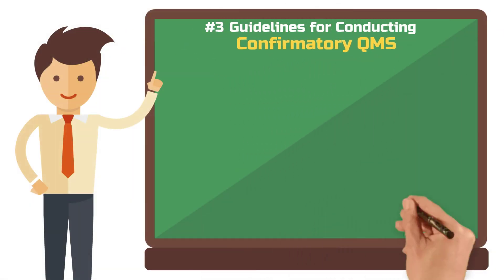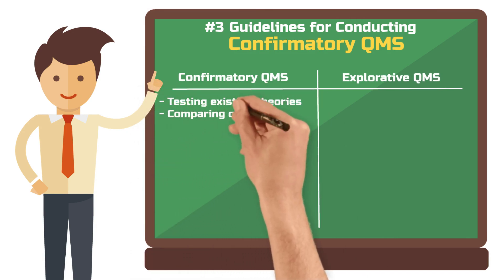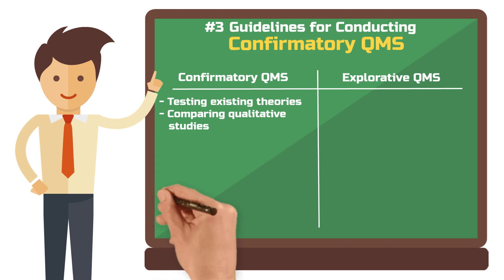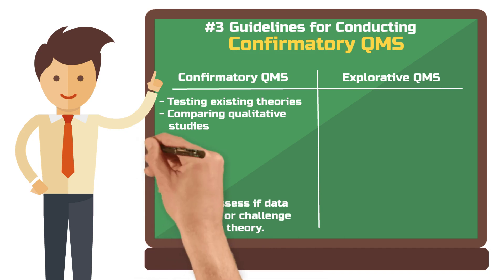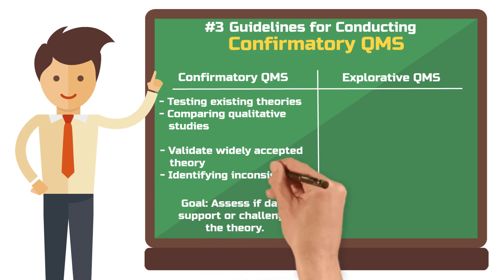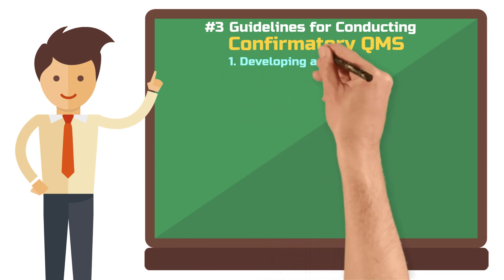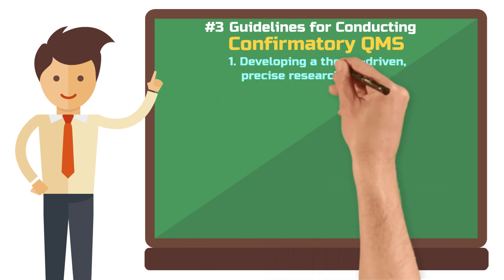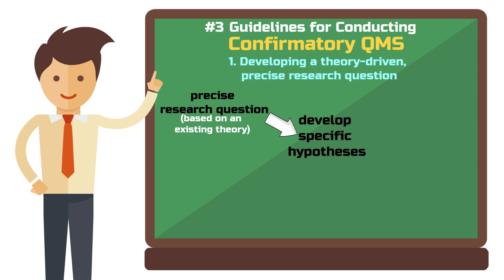Confirmatory qualitative meta-studies test existing theories by comparing findings from multiple studies. The goal is to determine whether the collected data supports or challenges a particular theory. This approach is particularly useful when you want to validate a widely accepted theory or identify inconsistencies across studies. First step: start with a precise research question grounded in an existing theory. This question will guide you in formulating specific hypotheses, which you'll test using data from various studies.